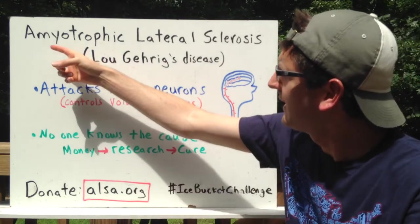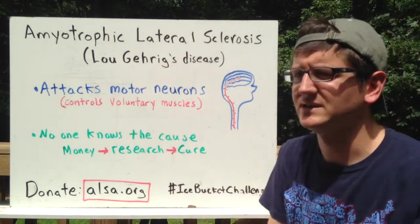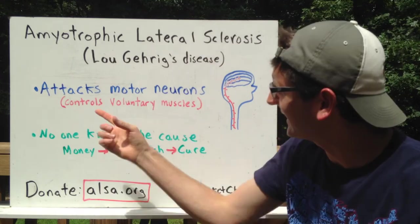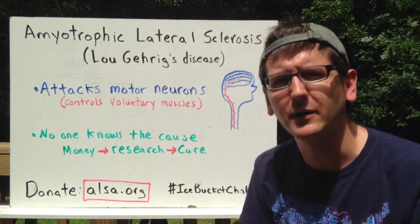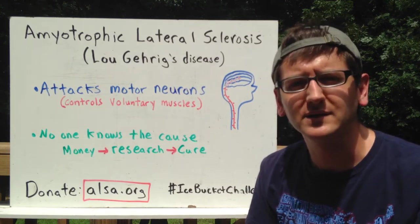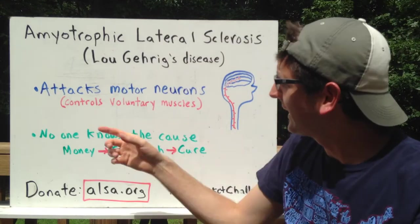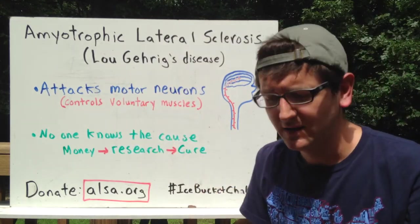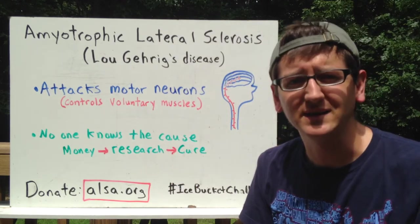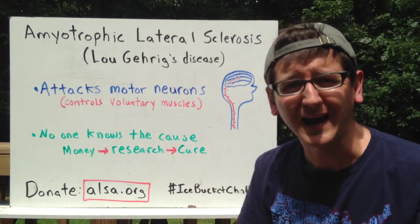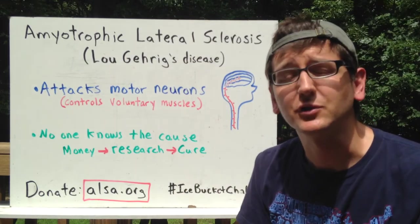So here is my short lecture. ALS stands for Amyotrophic Lateral Sclerosis, also known as Lou Gehrig's disease. What this disease does is it attacks the motor neurons that are in your brain and down your spine. These motor neurons are responsible for controlling voluntary muscles. Essentially, when your motor neurons are attacked, you lose control of your movements. That's the really drastic and sad reality of ALS.